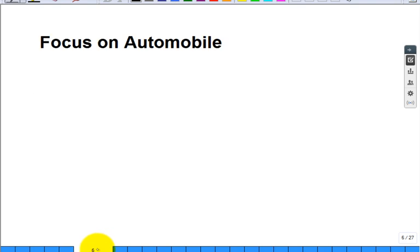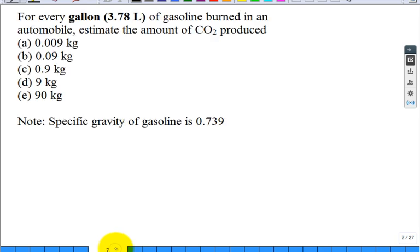So if we focus on the automobile, and we already started with that kilogram of gasoline, right? The next question is, is for every gallon of gas, because I don't buy it in kilos, I buy it in gallons. Well, some people say, hey, I'm in another country, I buy it in liters. Here's the conversion, 3.78 liters is a gallon, close enough. And we burn that in an automobile, how many, what amount of CO2 is produced for every gallon? You're going to use that coefficient you just calculated, and you're also going to use the specific gallon of gasoline is 0.739. So for every gallon of gas, how many kilograms of CO2 go out the tailpipe? Make that calculation and input it right now.